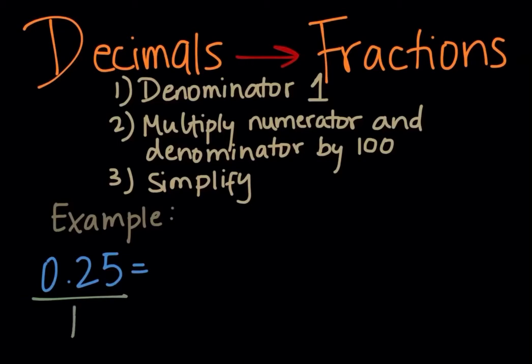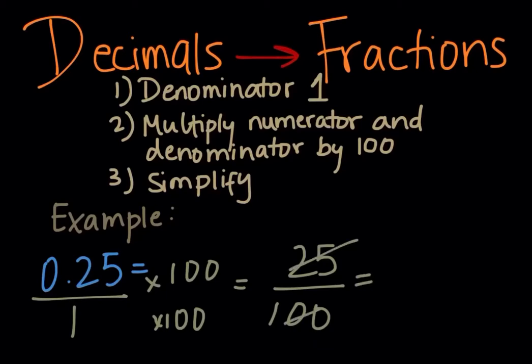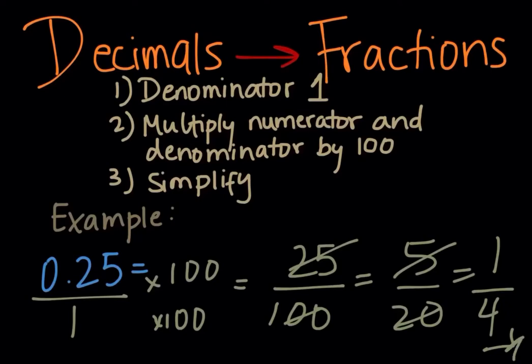So if this is your number, you divide it by 1, and then you multiply by 100 on top and on bottom. That will give you 25 divided by 100. You simplify it, which is 5, and then the denominator is 20. And then this can also be further simplified into one fourth. That's your decimals to fractions, three steps, very easy.